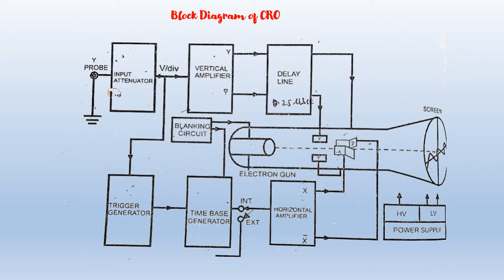CRO, i.e., Cathode Ray Oscilloscope. This is the Block Diagram of the Cathode Ray Oscilloscope. As you can see here, there are different blocks: Input Attenuator, Vertical Amplifier, Delay Line, Trigger Circuit, Time-Based Generator, Horizontal Amplifier, Blanking Circuit, Power Supply, and the main component — the CRT.